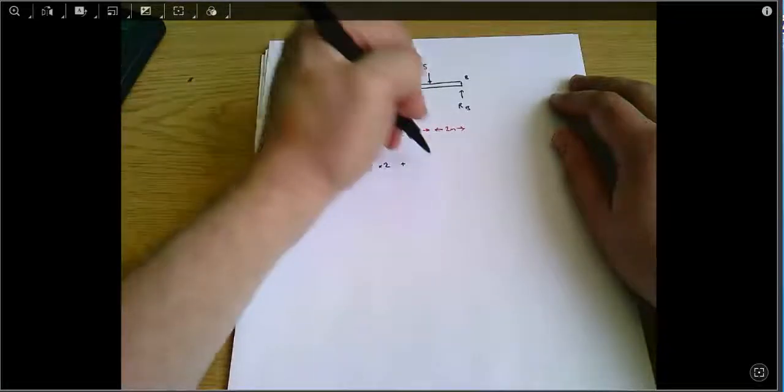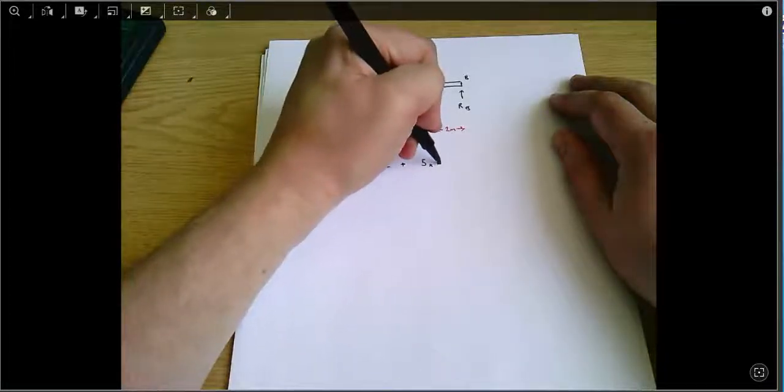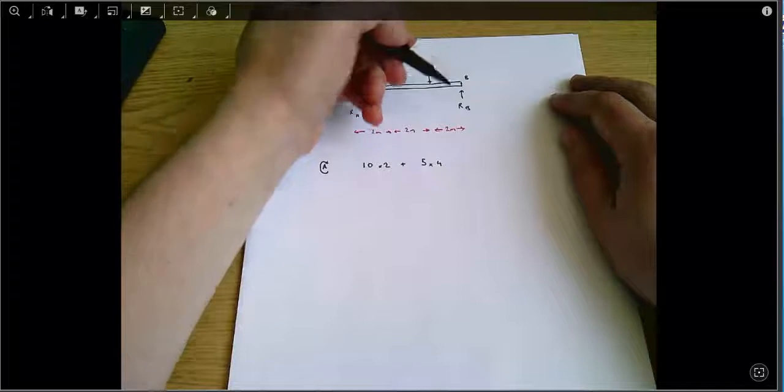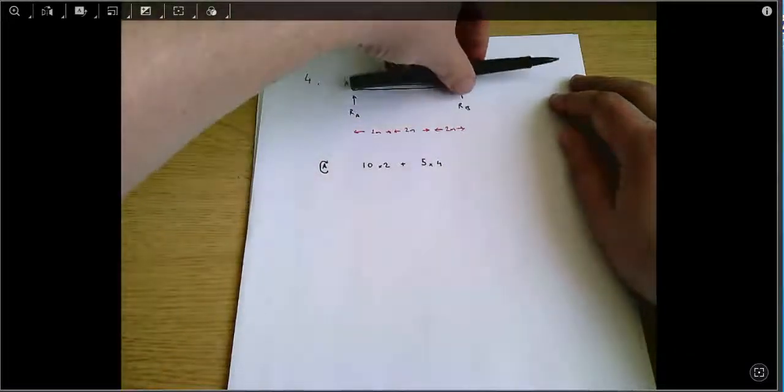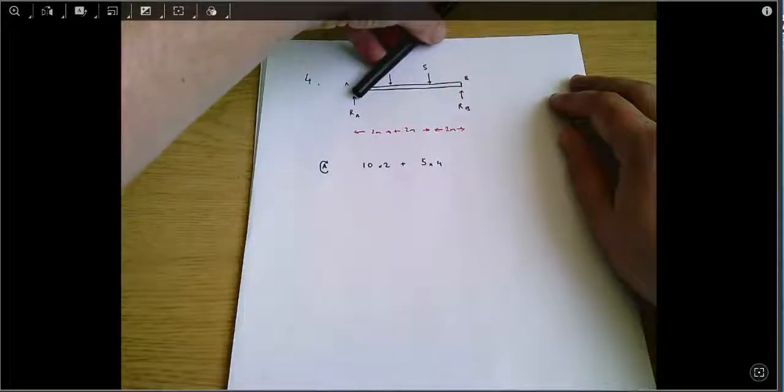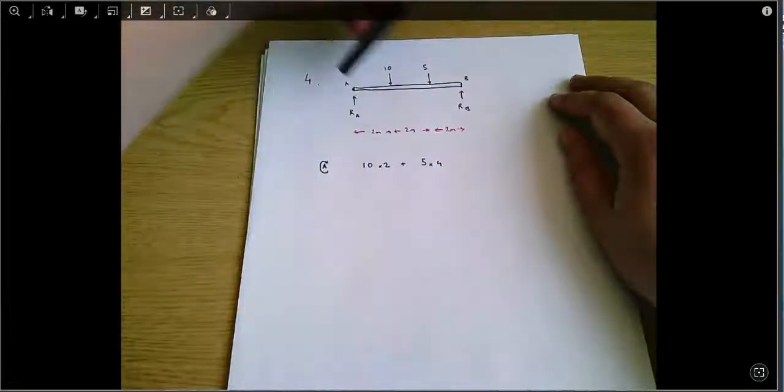So that's plus 5 times 4, and then our RB is pushing upwards, so it's going anti-clockwise in this context, tending to cause things to rotate that way.